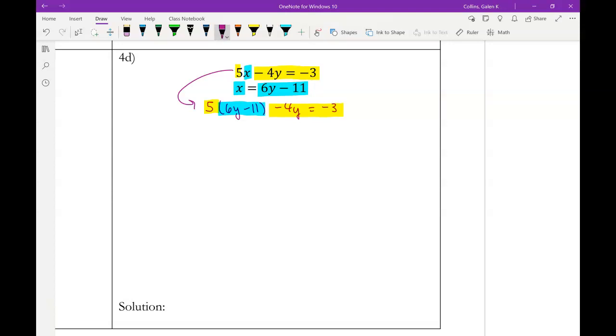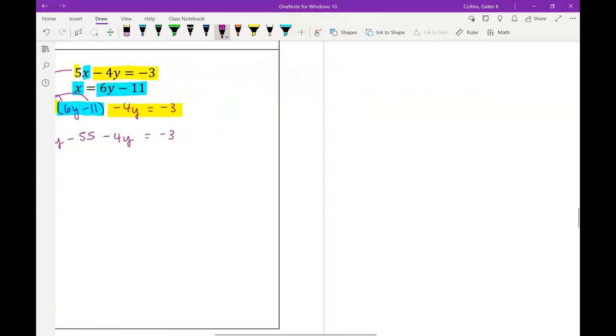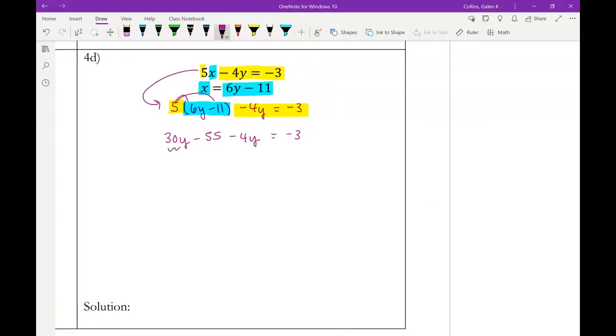Okay, so now we just distribute because our goal is to solve for y. Sometimes we find x first, sometimes we find y first. And it doesn't matter, it just depends on in what way we substitute. So when we distribute the 5, I get 30y minus 55. Then we still have a minus 4y equals negative 3. Then we generally want to combine any like terms. So 30y and negative 4y is what? 26y.